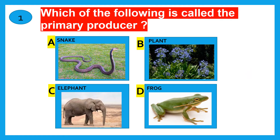Which of the following is called primary producer? Snake, plant, elephant, frog? The correct answer is plant.